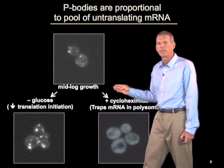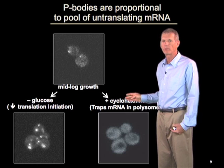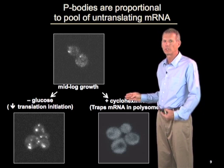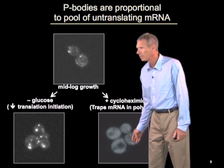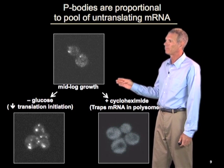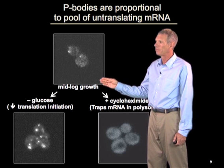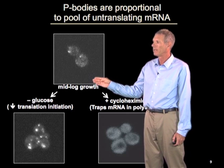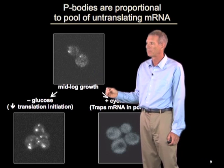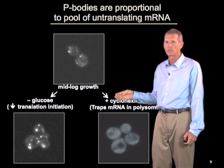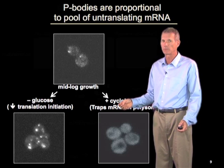Conversely, if we treat cells with cycloheximide, which traps mRNAs in polysomes — that is, in association with ribosomes — the p-bodies disappear. These observations support the model that RNAs partition between translation or p-bodies, depending upon whether they are associated with ribosomes or with the components of these p-body structures.